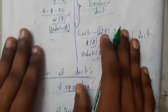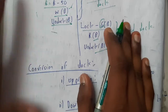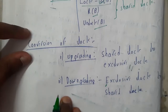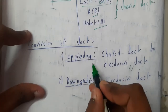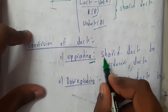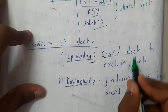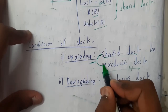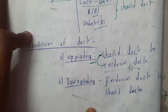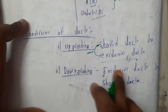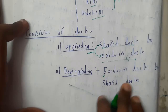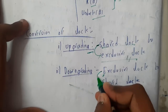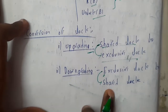There are two conversions of locks. We can upgrade a lock — converting a shared lock to an exclusive lock, adding write capability to a read-only lock. Downgrading is also possible — converting an exclusive lock to a shared lock, reducing it to a read-only operation.